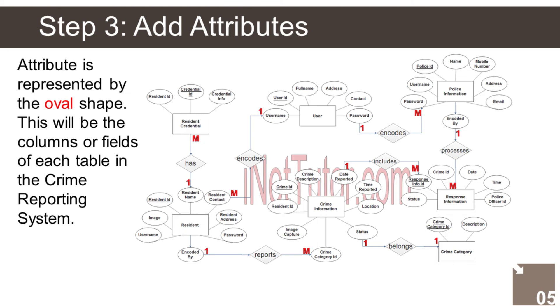The Crime Category entity has the following attributes: 1. Crime Category ID — primary key, represented with underline, 2. Description.